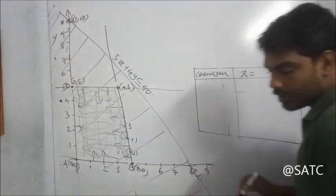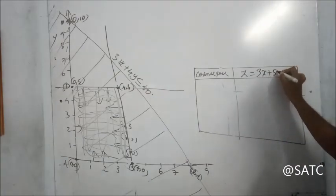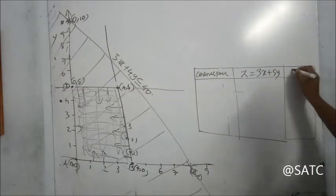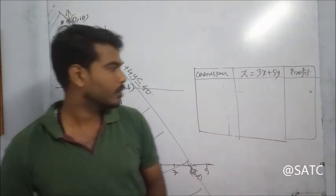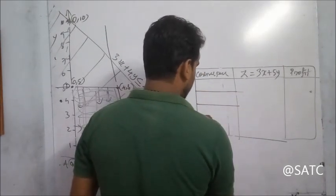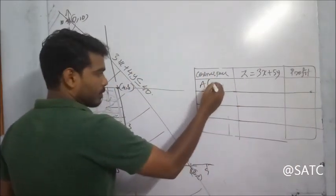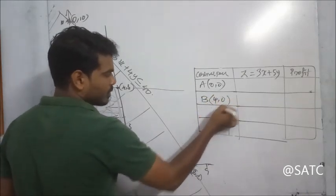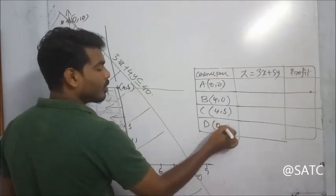We evaluate the objective function Z equal to 3x plus 5y at each corner point. Corner points are: A = (0,0), B = (4,0), C = (4,5), D = (0,5).